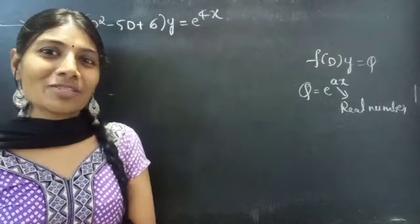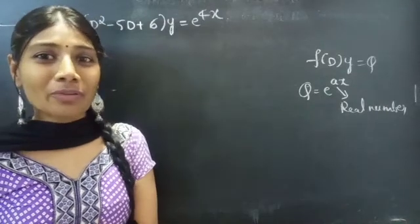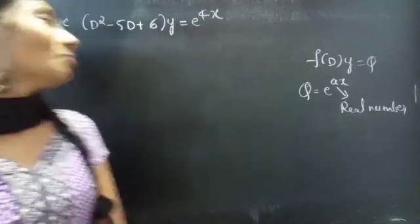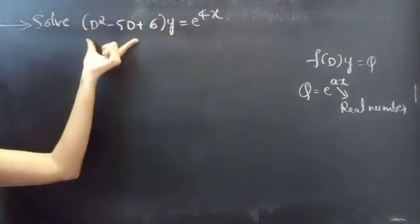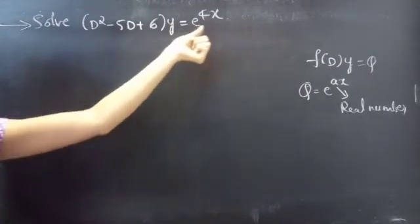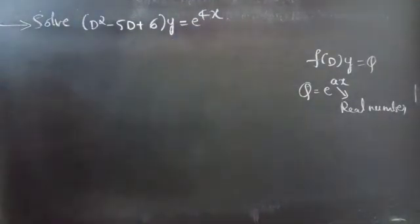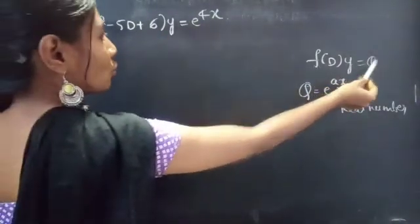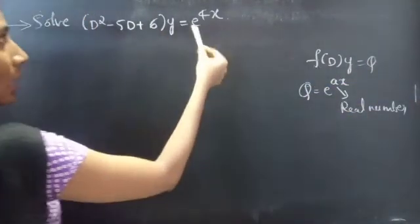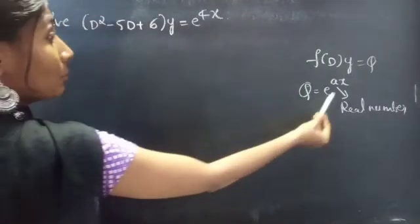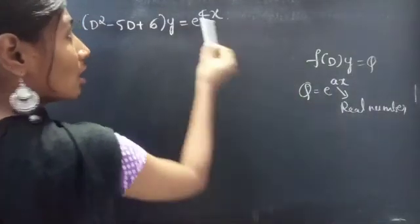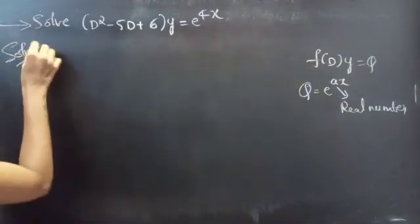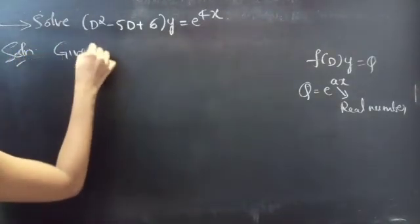Hello everyone, this is Zia Kalpana. In this video we are going to see a problem from higher order linear differential equations. The problem is: solve (D² - 5D + 6)y = e^(4x). We are given an equation in the form f(D)·y = Q, where Q = e^(4x), which is of the e^(ax) form where a = 4 is a real number.